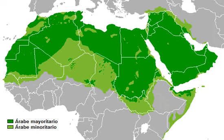Arabic is a central Semitic language, closely related to the Northwest Semitic languages Aramaic, Hebrew, Ugaritic and Phoenician, the ancient South Arabian languages, and various other Semitic languages of Arabia such as Dadanitic. The Semitic languages changed a great deal between Proto-Semitic and the establishment of the Central Semitic languages, particularly in grammar. Innovations of the Central Semitic languages — all maintained in Arabic — include the conversion of the suffix-conjugated stative formation into a past tense, and the conversion of the prefix-conjugated preterite tense formation into a present tense.